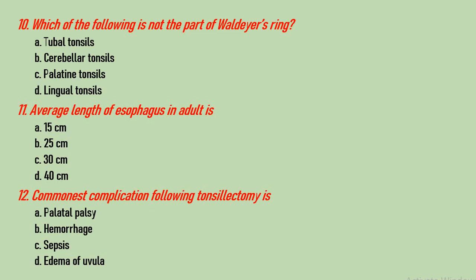Question number 11: average length of the esophagus in adults is 15 cm, 25 cm, 30 cm, or 40 cm? Average length in adults is 25 cm — straightforward answer. Question number 12: the commonest complication of tonsillectomy is palatual paralysis, hemorrhage, sepsis, or edema of the uvula? Although hemorrhage is described as the most troublesome complication after tonsillectomy, the commonest complication is edema of the uvula. Palatual paralysis is rare, hemorrhage might occur sometimes, and sepsis is rare.